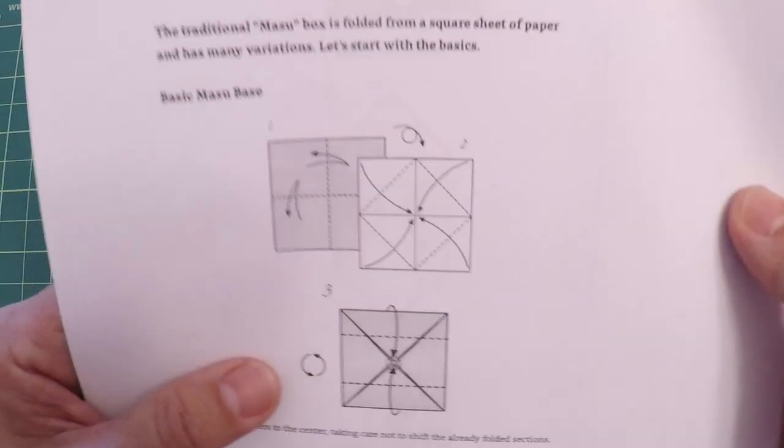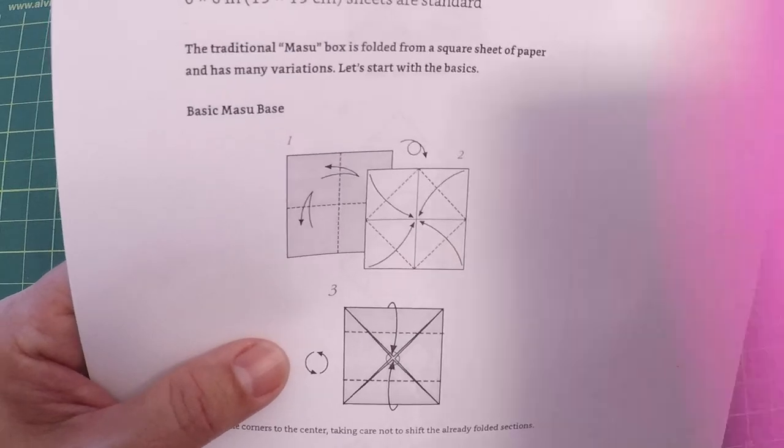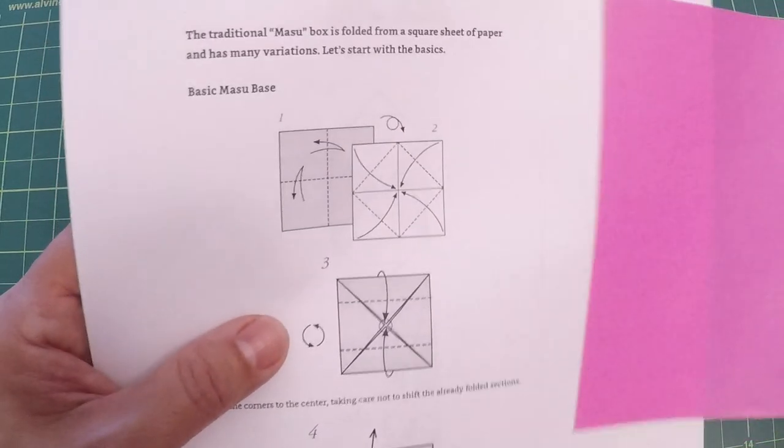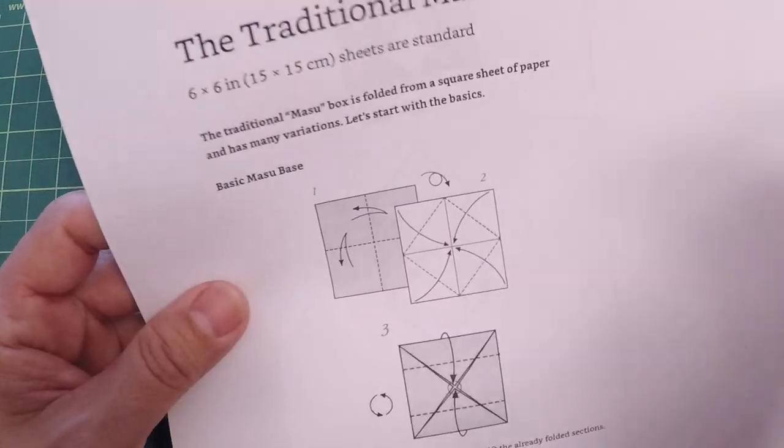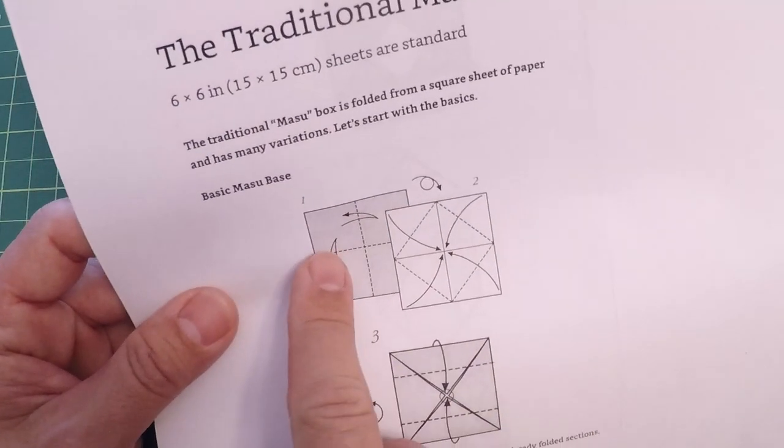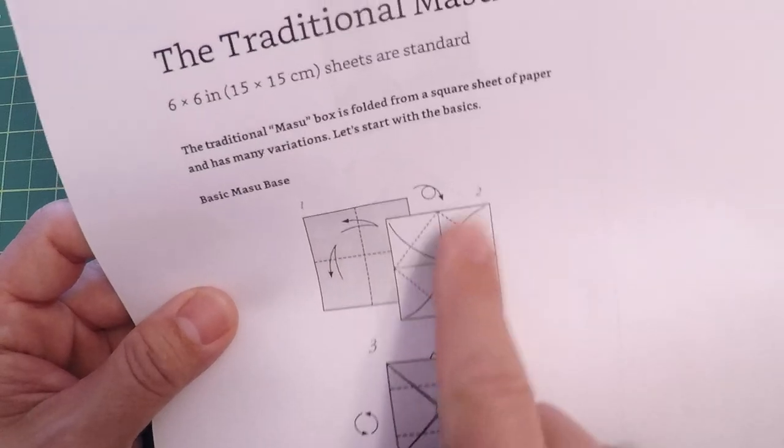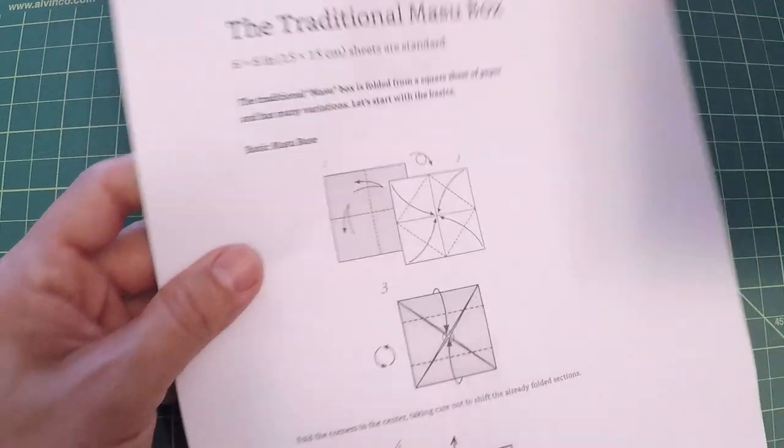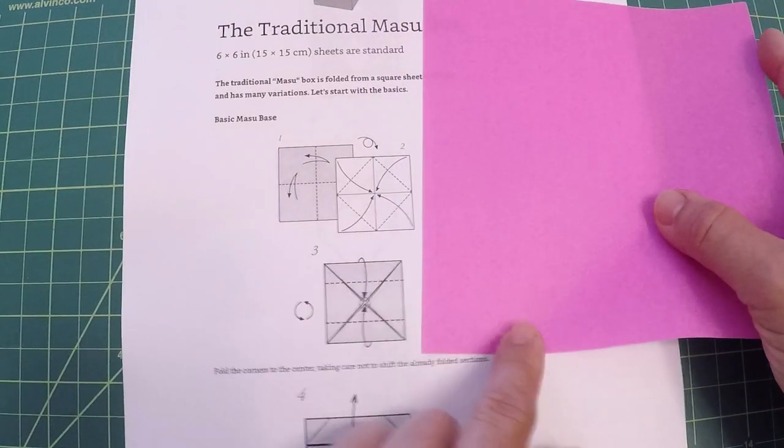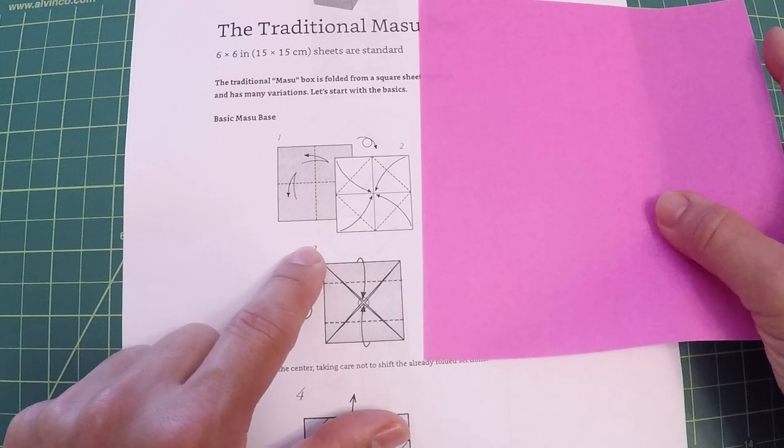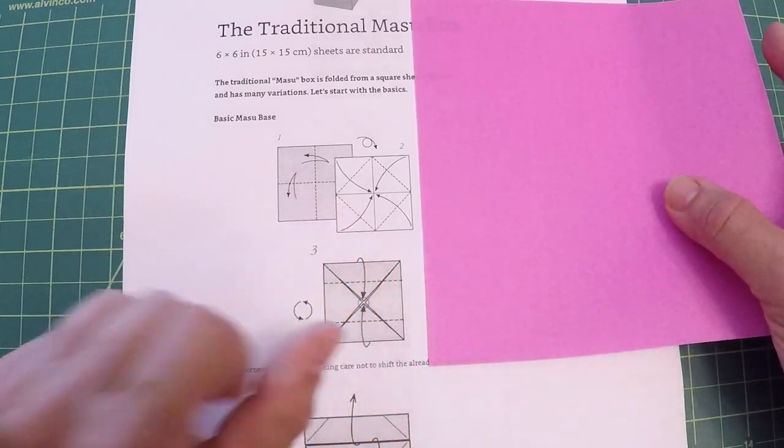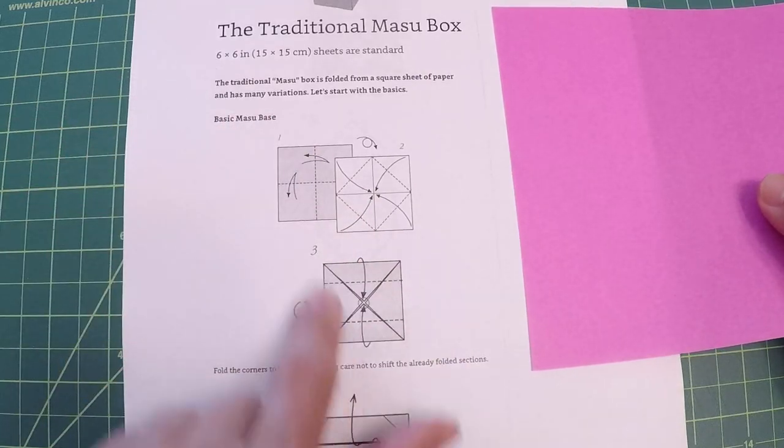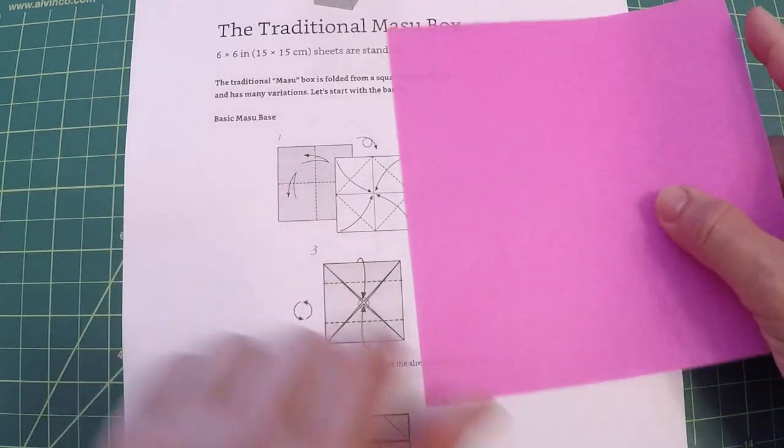You're going to first notice that origami paper has a colored side and a non-colored side. The colored side usually on origami instructions are dark and the white side is white. So here you can see that it's saying first take your sheet colored side down and do a fold. If you don't understand what the symbols are and what the folds are, in the beginning of the instructions there are the symbols for you to catch up on.